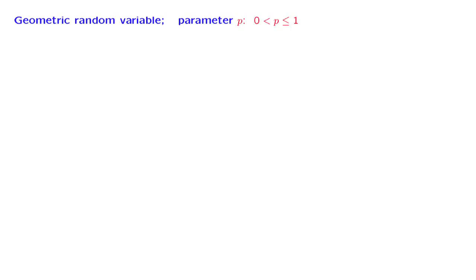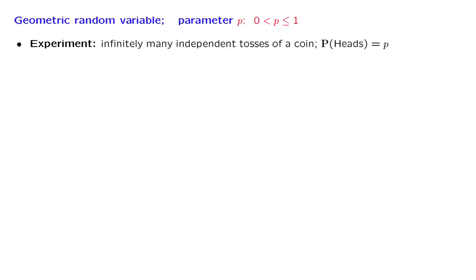The last discrete random variable that we will discuss is the so-called geometric random variable. It shows up in the context of the following experiment. We have a coin, and we toss it infinitely many times, independently. At each coin toss, we have a fixed probability of heads, which is some given number p. This is a parameter that specifies the experiment.